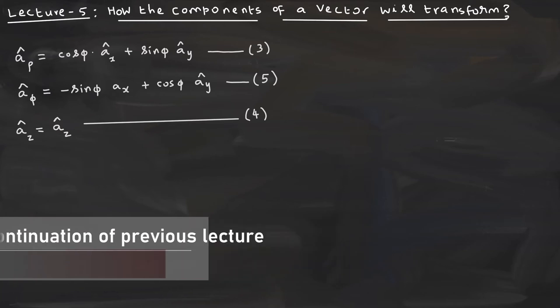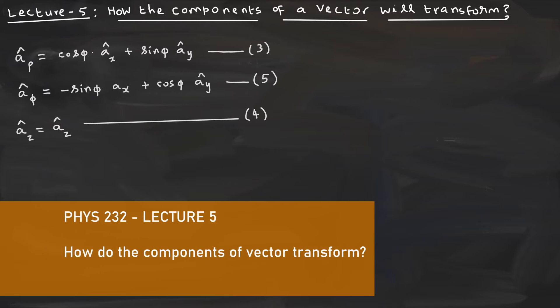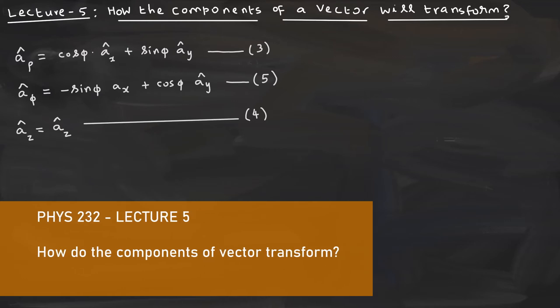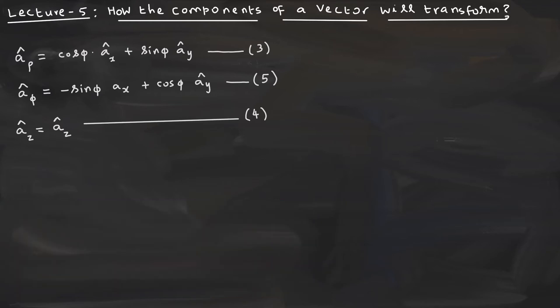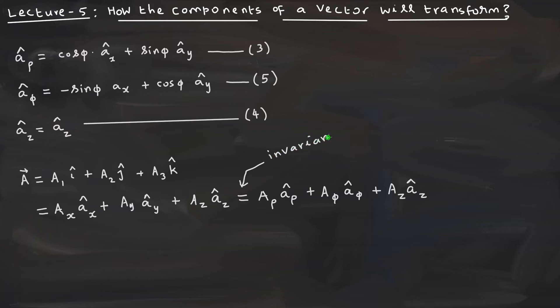Hello students. Today we are interested in understanding how the components of a vector will transform under a coordinate transformation, which are equation numbers 3, 5, and 4. These three equations have been obtained in the last class. We are writing it in the case of the cylindrical polar coordinate system, and this equality is what we say is invariant.